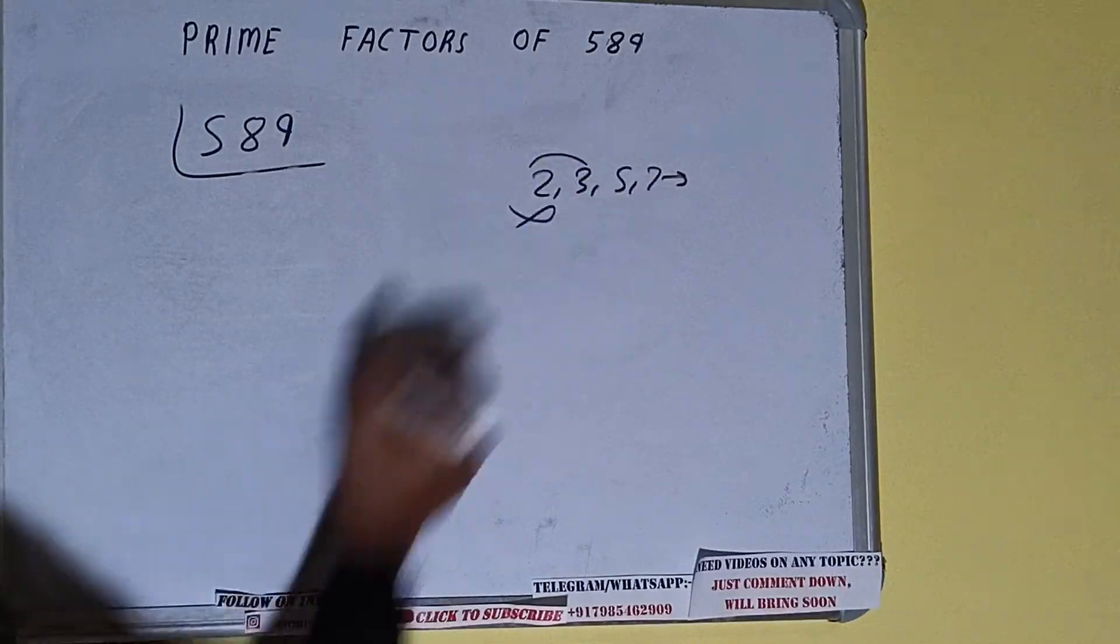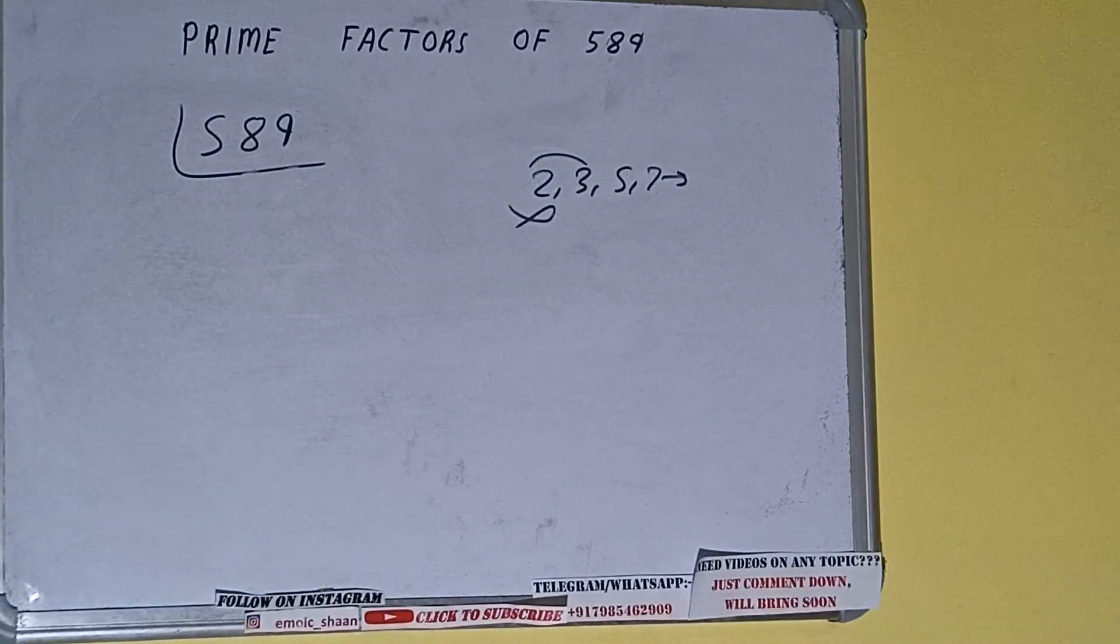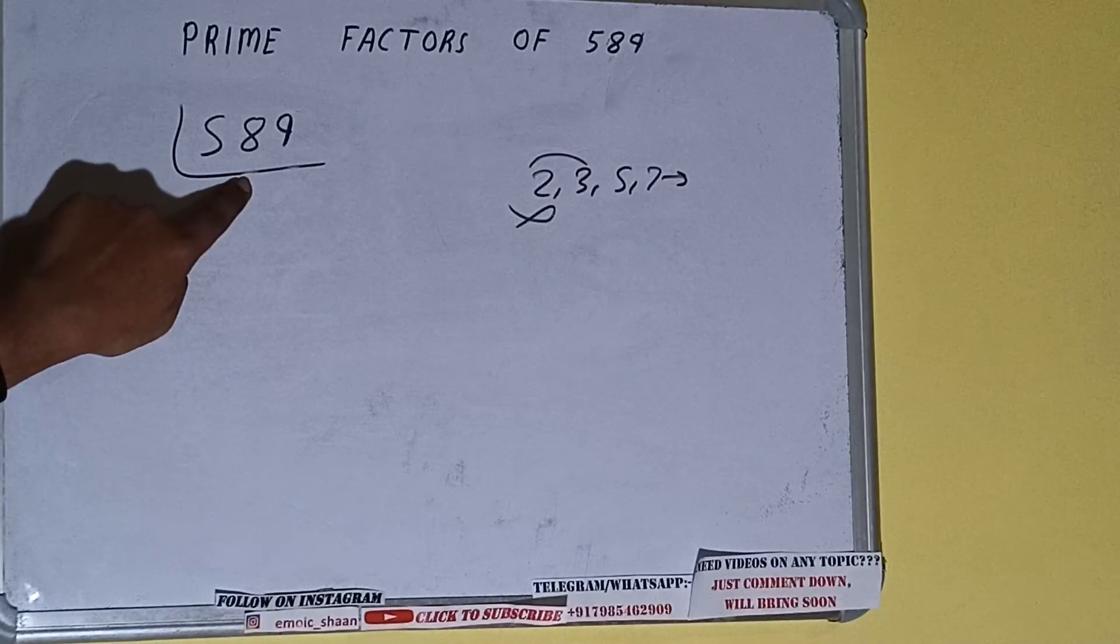So we'll check with the next lowest prime number, that is 3. 3 ones are 3, 2 8, 3 nines are 27, 1 9. It is not divisible by 3 also.